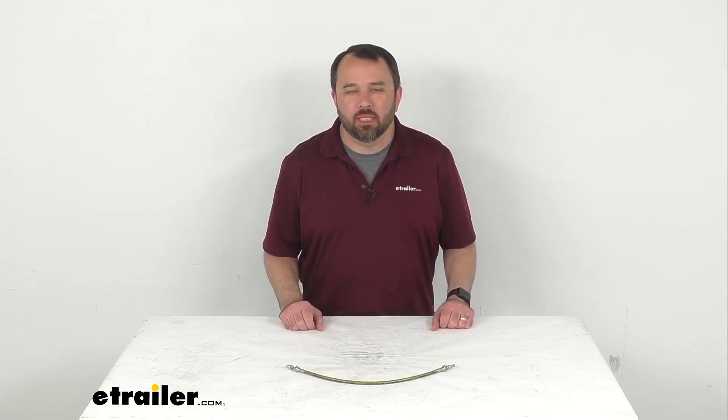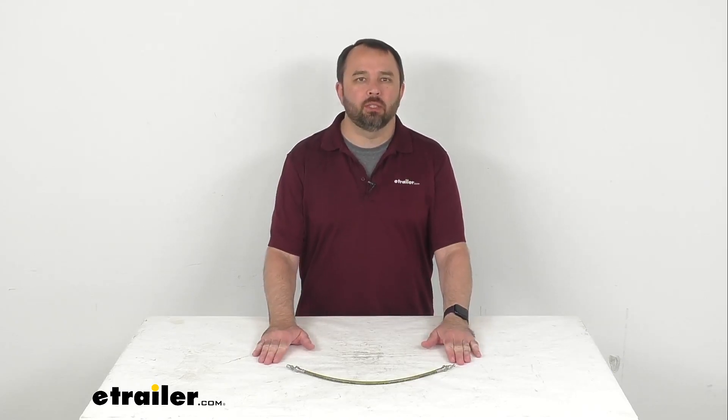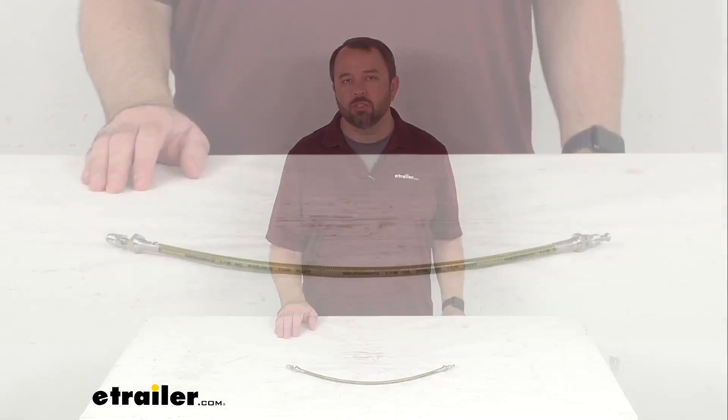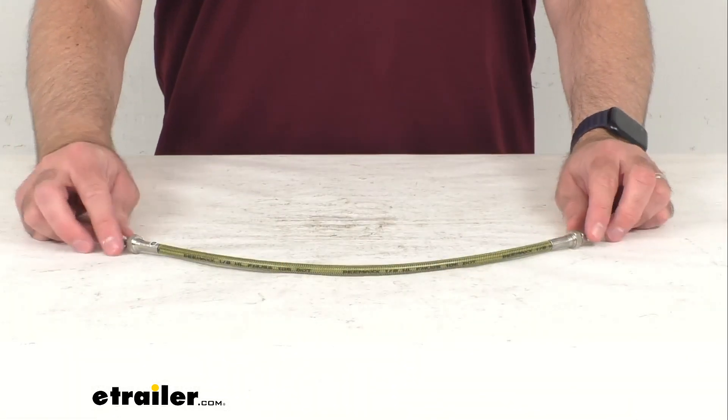Hi everybody, Andy here with eTrailer.com. Today we're going to take a quick look at this D-Max 18 inch long braided hydraulic brake hose.